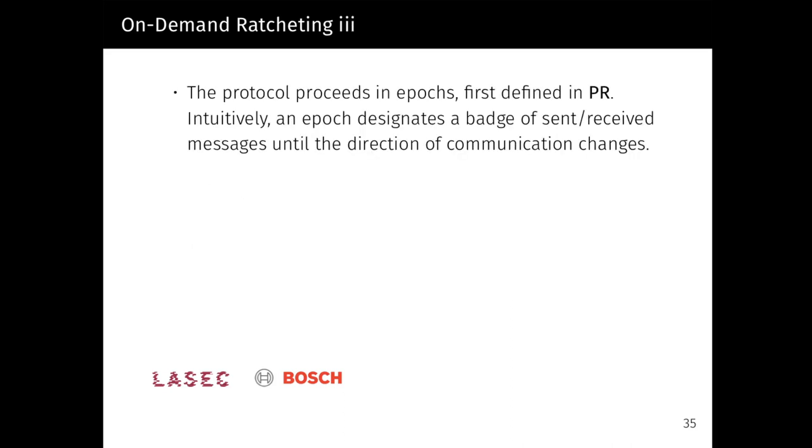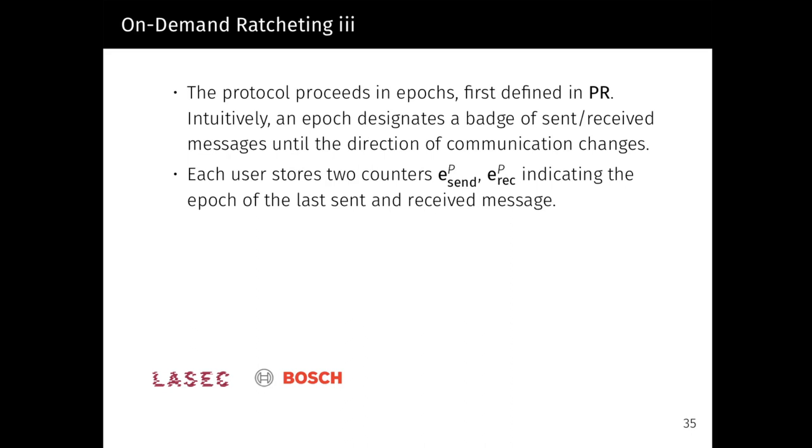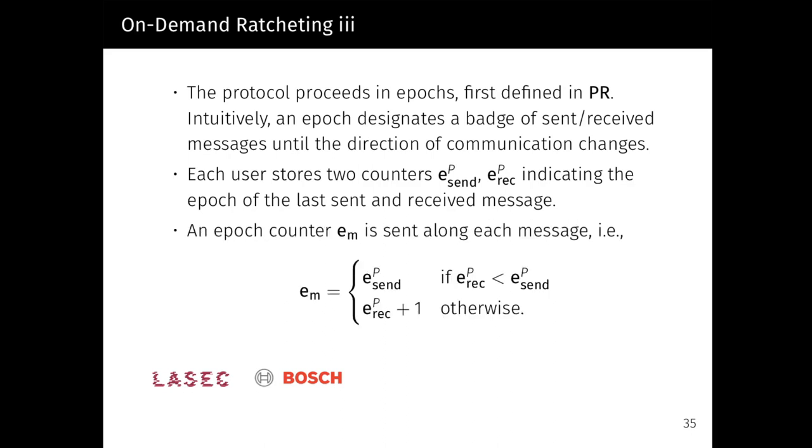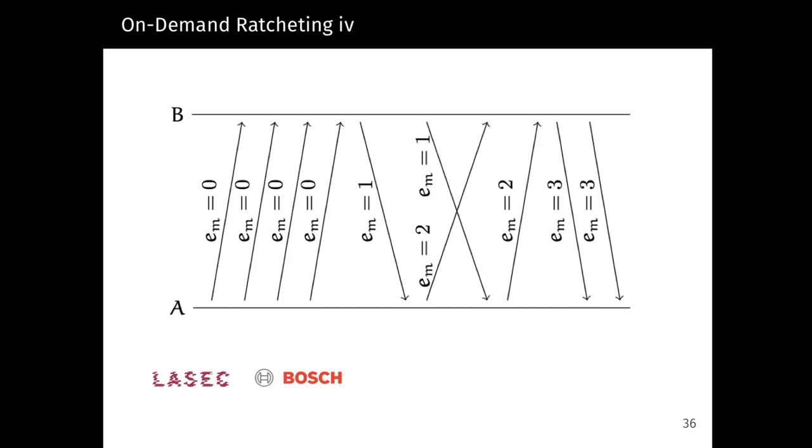Our protocol proceeds in so-called epochs, a concept that first appeared in the Poettering-Rösler protocol. Intuitively, an epoch designates a batch of sent and received messages until the direction of communication changes. For this, each user stores two counters, e_send and e_receive, indicating the epoch of the last sent and received message. An epoch counter is also sent alongside each message. So here an epoch counter e(m) is equal to e_send if e_receive is smaller than e_send, or equal to e_receive plus 1 otherwise. How does this look like in an example? So here, in this example, user A starts off with a batch of messages that are sent to B, and B responds with an incremented message epoch. A responds again, but this time the message of A crosses an earlier message of B. So in the following response to this message by A, the epoch counter is not incremented.